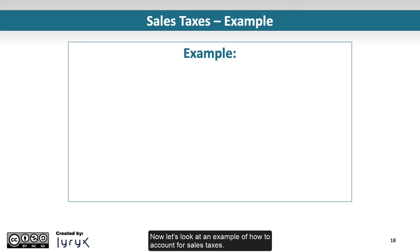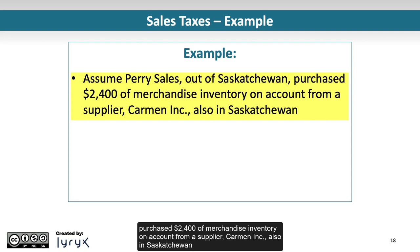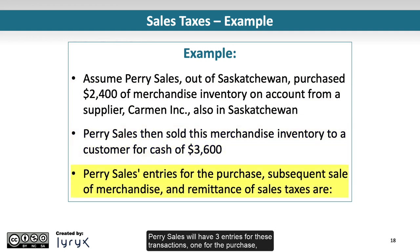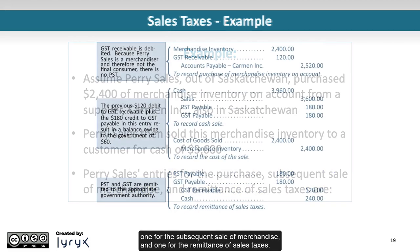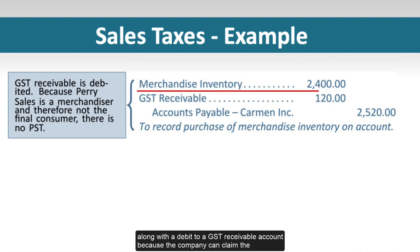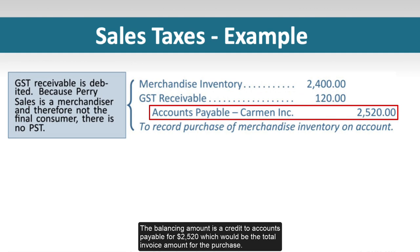Now let's look at an example of how to account for sales taxes. Assume Perry Sales, out of Saskatchewan, purchased $2,400 of merchandise inventory on account from a supplier, Carmen Inc., also in Saskatchewan. Perry Sales then sold this merchandise inventory to a customer for cash of $3,600. Perry Sales will have three entries for these transactions: one for the purchase, one for the subsequent sale of merchandise, and one for the remittance of sales taxes. The purchase entry includes a debit to merchandise inventory of $2,400, a debit to GST receivable because the company can claim the GST charged as an input tax credit, and a credit to accounts payable for $2,520, which is the total invoice amount.